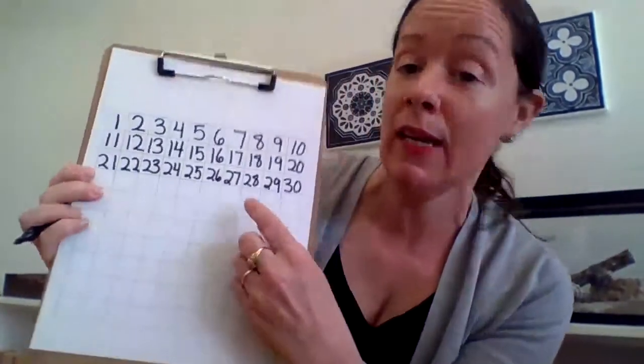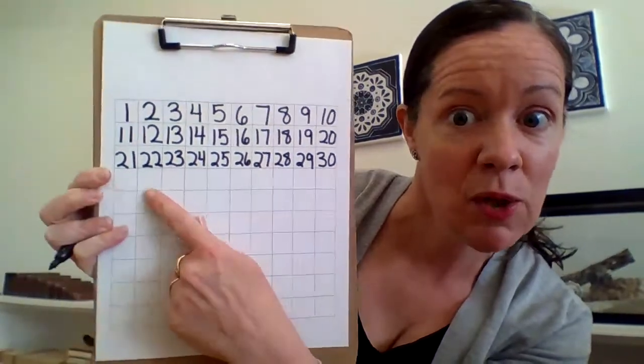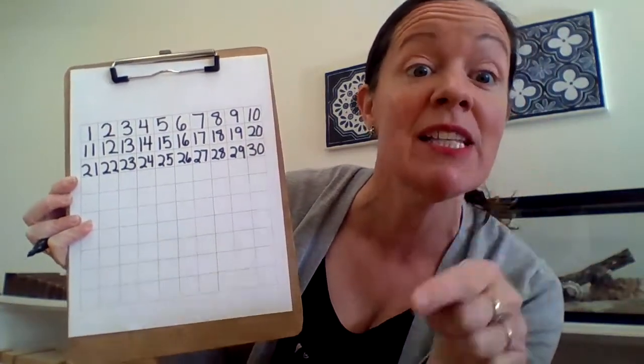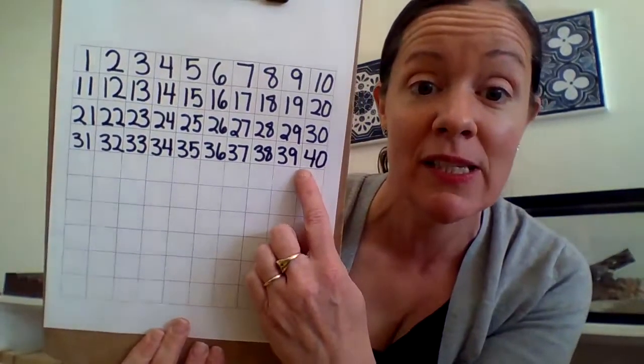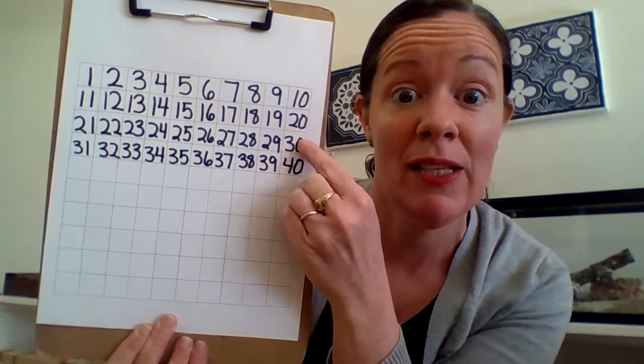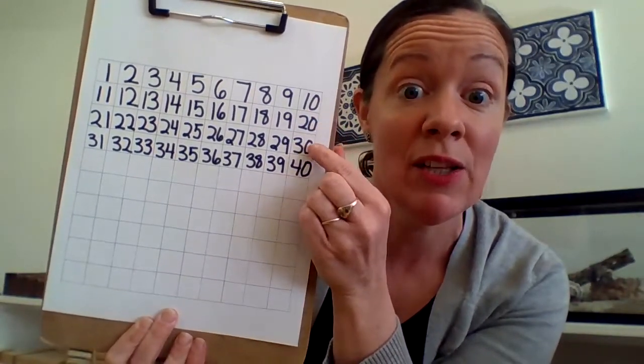30 is three tens and zero units. 31, 32, 33. Remember you can pause at any point to catch up to me. 34, 35, 36, 37, 38, 39, 40. Four tens and zero units. So it's four in the tens place and then a zero. 40. That's four tens. You can kind of see it coming, right? One ten, two tens, three tens, four tens, which we also call 10, 20, 30, 40.